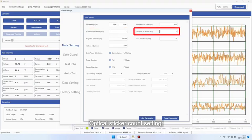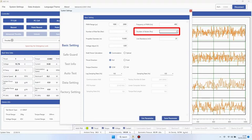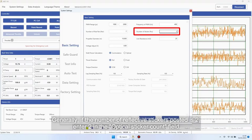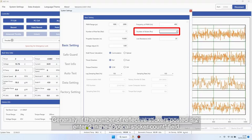Optical sticker count setting. This is a measurement of the rotational speed of two blades. Generally, if the number of reflective stickers posted is 2, enter 2 in the optical sticker count field.